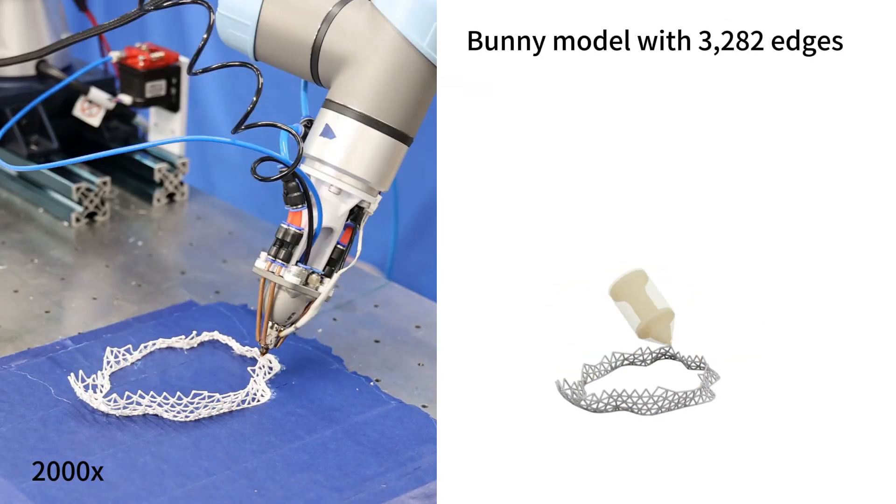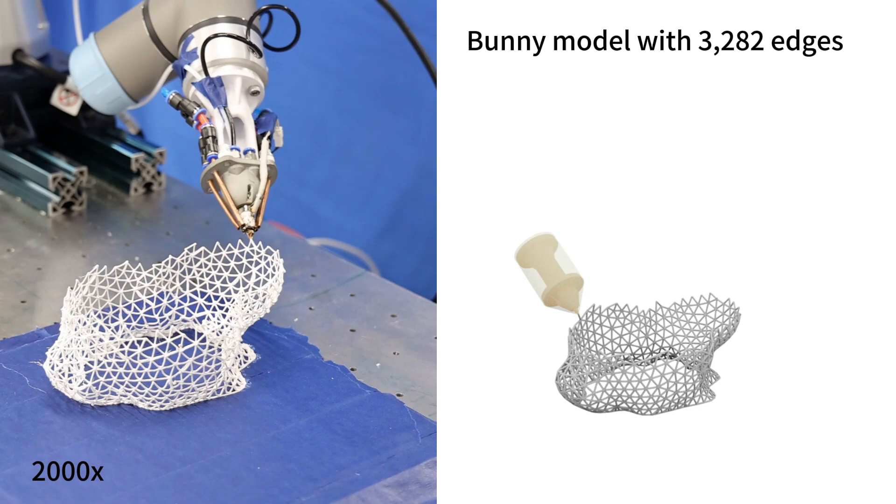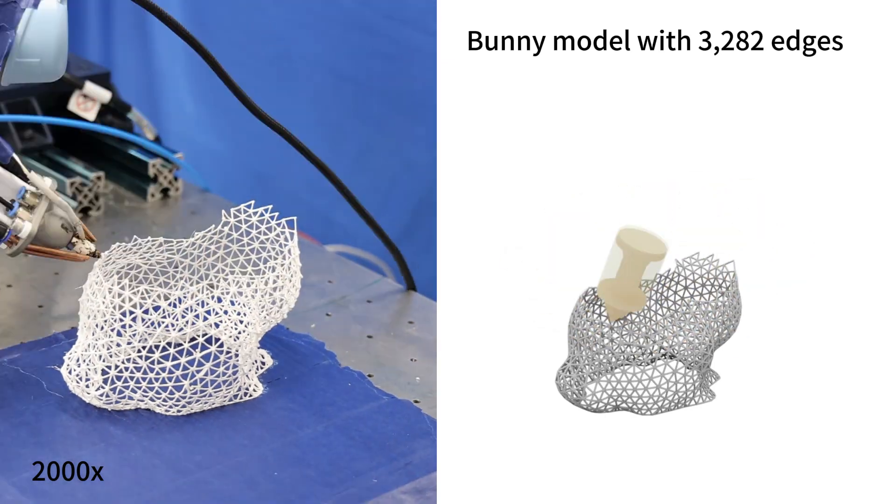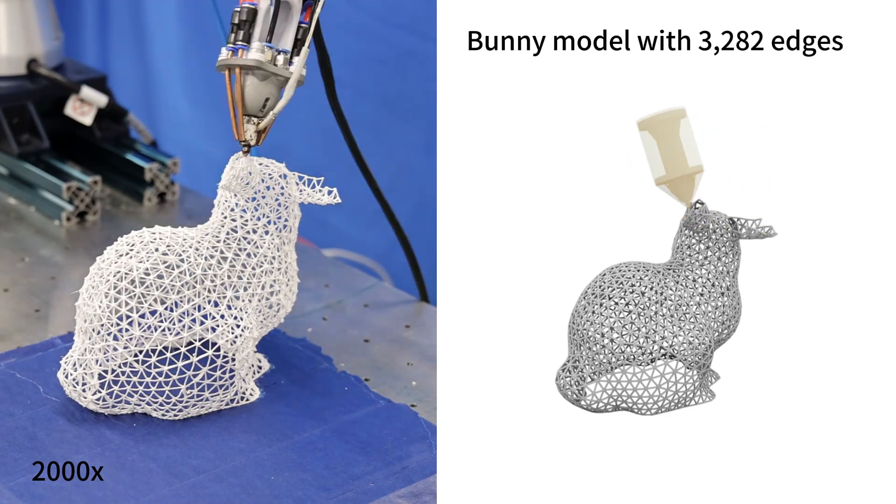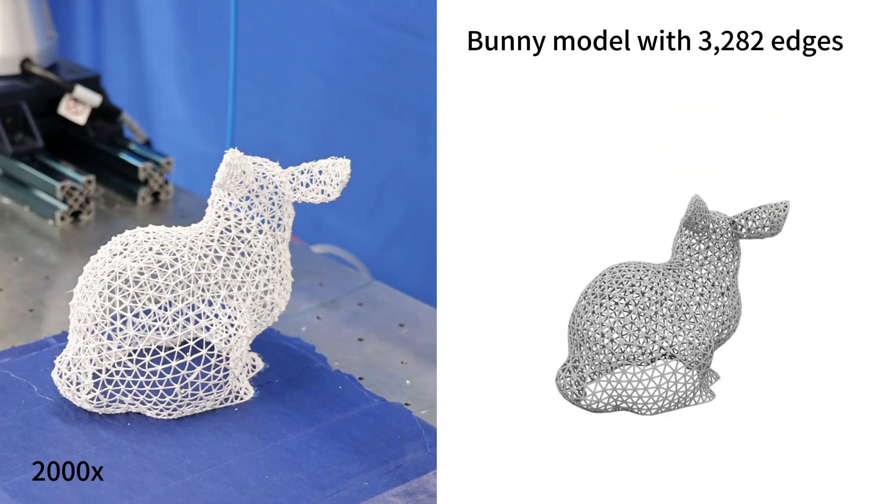As its nature of on-the-fly computing, our planner is able to compute optimized toolpaths on large-scale graphs. Here we demonstrate its capability to plan the path of wireframe printing on a bunny model with more than 3000 edges.